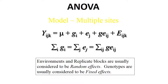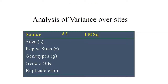Analysis of variance partitions the total variance into its components for multiple environment or gene-environment interaction. Here the formula is given. Environments and replicate blocks are usually considered as random effects, whereas genotypes are usually considered as fixed effects. Analysis of variance is given for different oversites, over seasons, over years, like that.